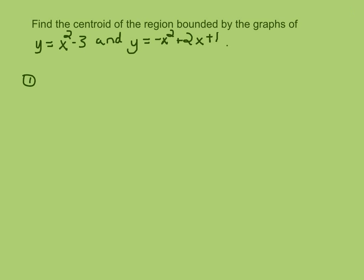The first step is to find the intersection. So we set these two curves equal to each other. x squared minus 3 equals negative x squared plus 2x plus 1.